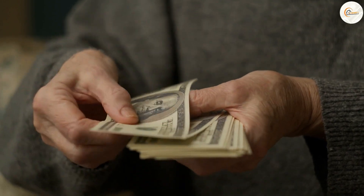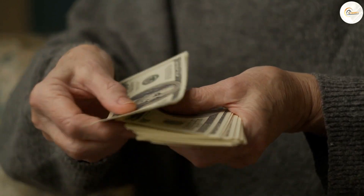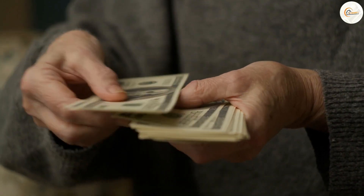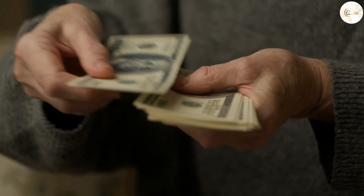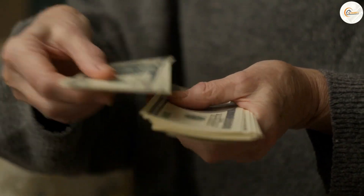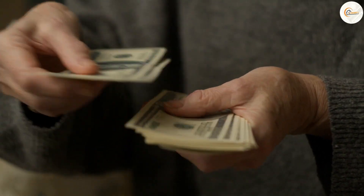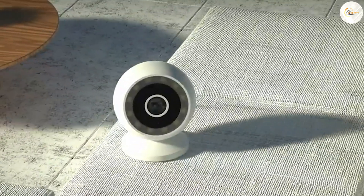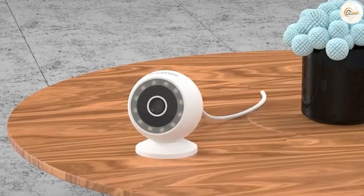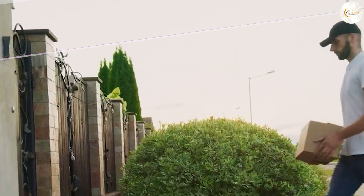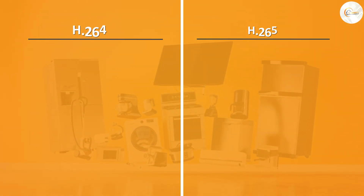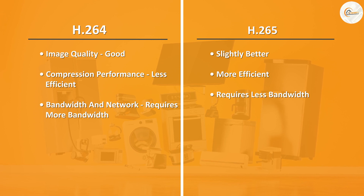Price: Price is always a factor when deciding on a security camera system. Generally speaking, cameras that use H.265 compression technology are more expensive than those that use H.264. However, the cost difference may be offset by the benefits of H.265, such as reduced storage requirements and improved network performance.